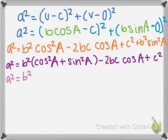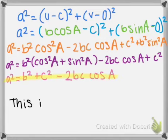So then you get a squared equals b squared plus c squared minus 2bc cosine A. And this is your Law of Cosines.